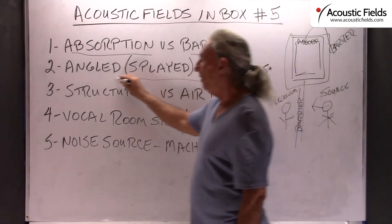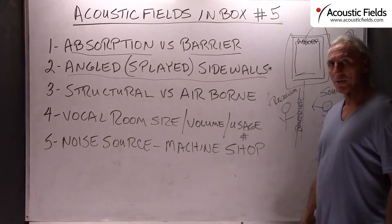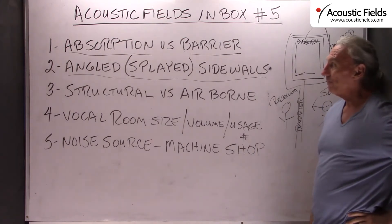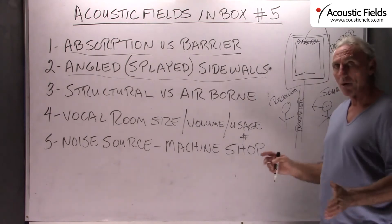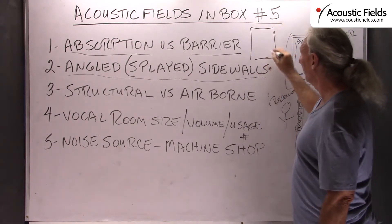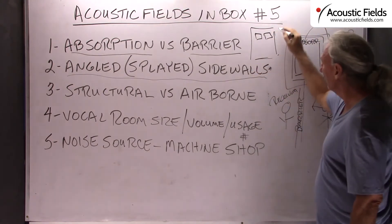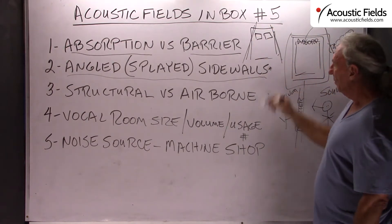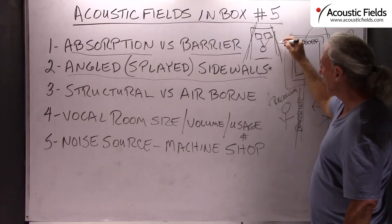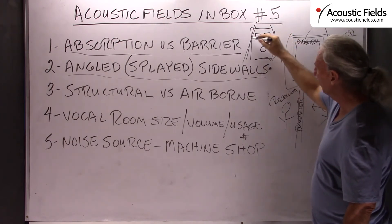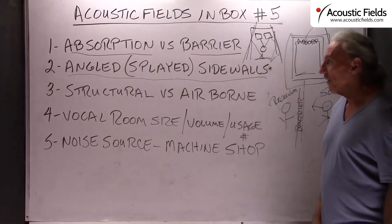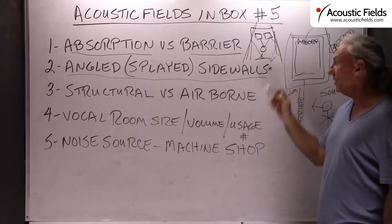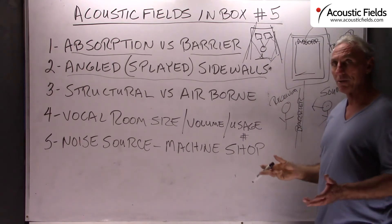Here's another one we get a lot of questions about, though it's not really popular anymore and it's very expensive and not really used in studios today: angled or splayed sidewalls. In a two-channel setup with a left and right speaker, the thinking is that angling the sidewalls reduces reflections at the listening position because the angles send the reflections behind the listening position. The angle you use depends on usage, distance from speaker to listening position, listening position to the rear wall, and size and volume.